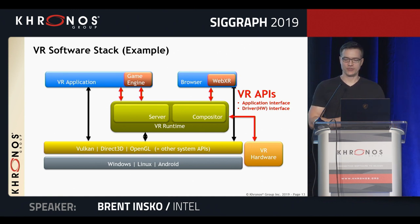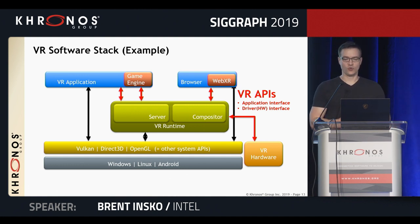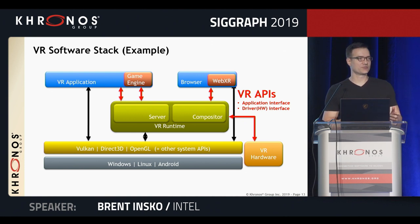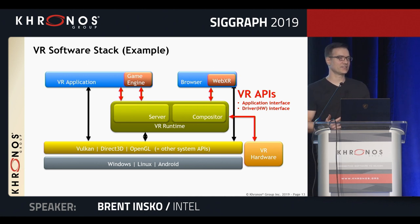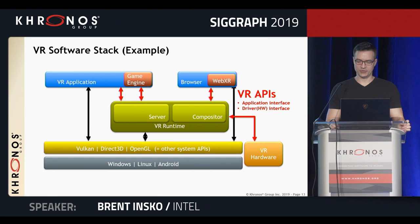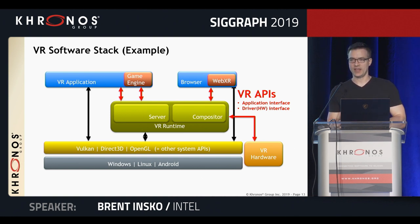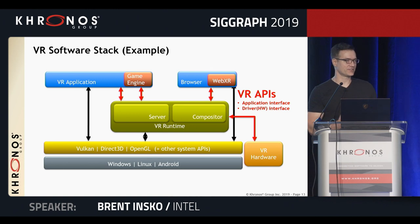Let's take a closer look at a typical VR software stack. You have an application that either directly, through a game engine, or through a browser via WebXR, talks to the graphics and other system APIs. It also talks to something we term a VR runtime, supplied by the VR platform vendor. The runtime is responsible for things like handling tracking, compositing the final image out to the HMD, and handling controller input. The runtime then talks through to VR hardware to get raw tracking coordinates and whether physical buttons have been pressed.